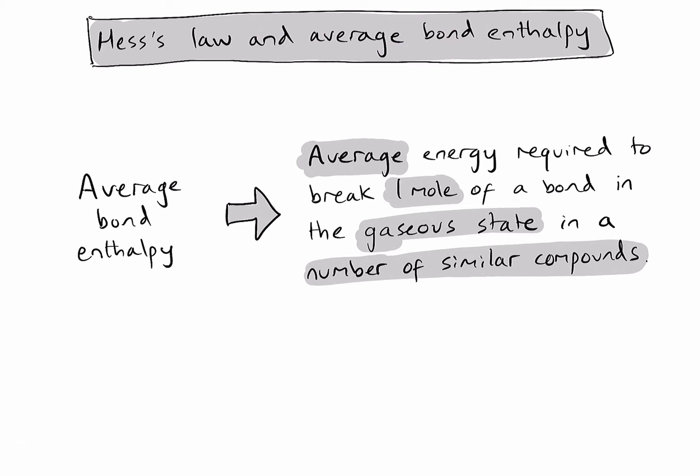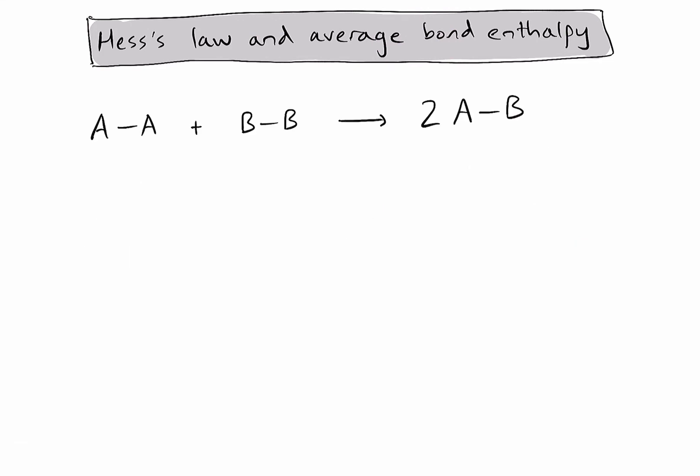Let's now consider how we use average bond enthalpy data to calculate the enthalpy change in a chemical reaction. In this generic example, we're reacting a molecule containing two atoms of A with a molecule containing two atoms of B to form two molecules containing an atom of A and an atom of B. And you'll notice that I've drawn the bonds in these molecules, and that's going to be a really important step that allows you to identify which specific average bond enthalpy data you'll need to use in the question.